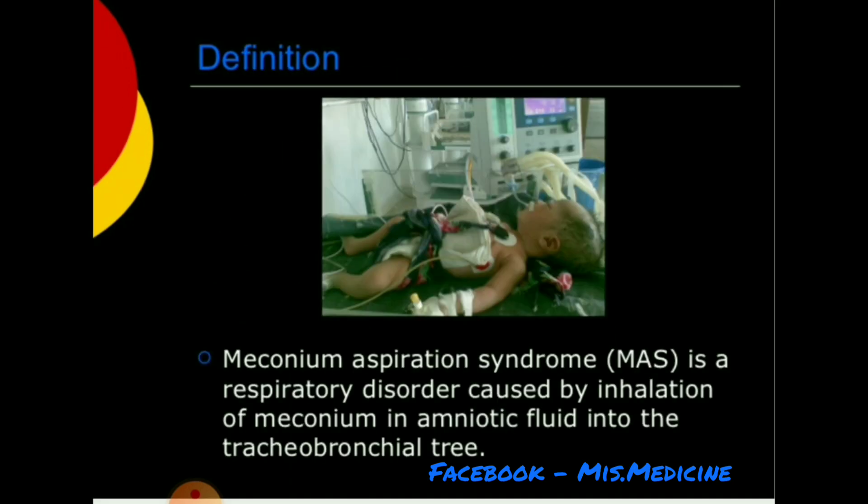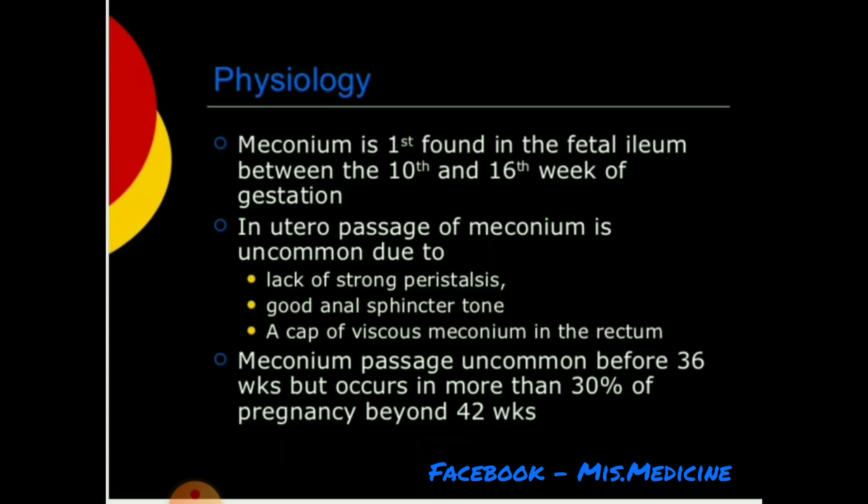What is MAS? Meconium aspiration syndrome is a respiratory disorder caused by inhalation of meconium in amniotic fluid into the tracheobronchial tree. Regarding physiology, meconium is first found in the fetal ileum between the 10th and 16th week of gestation.